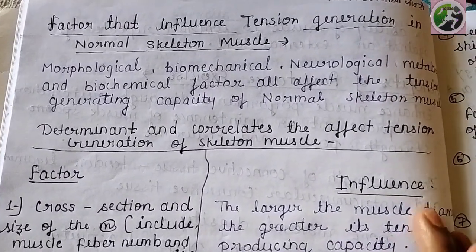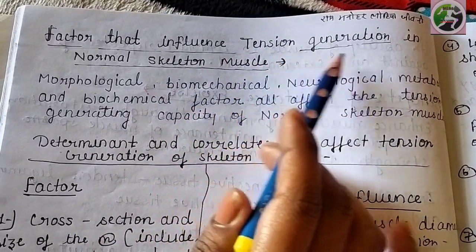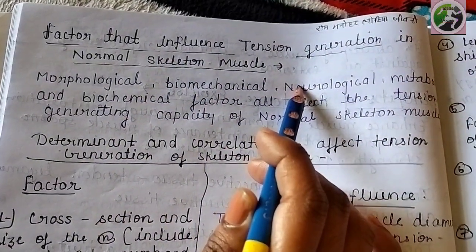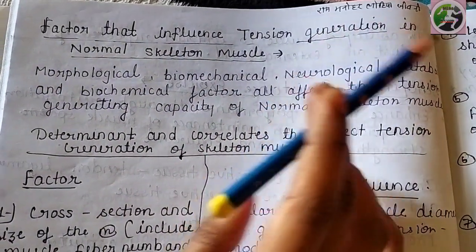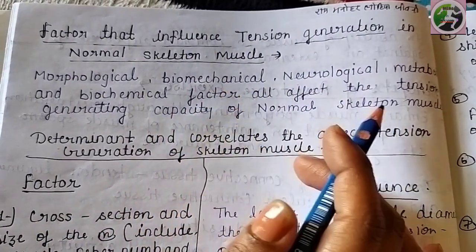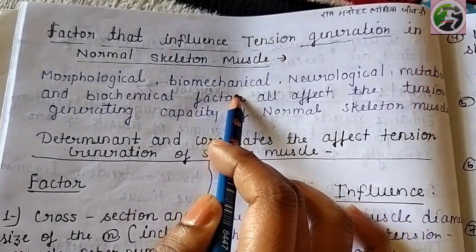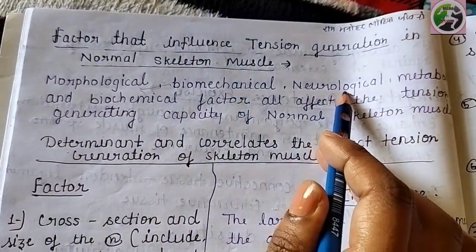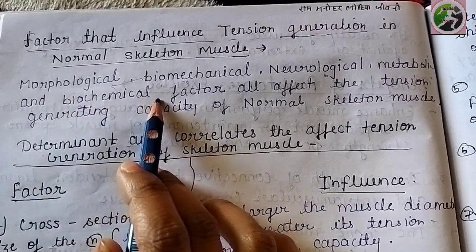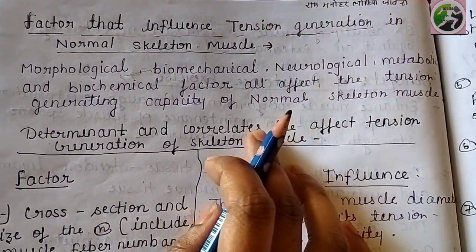So let's look at what factors influence tension generation in normal skeletal muscles. The factors that generate tension include morphological, biomechanical, neuro-mechanical, metabolic, and biochemical factors.